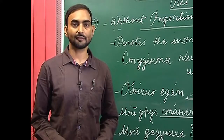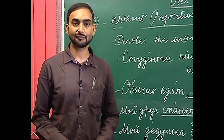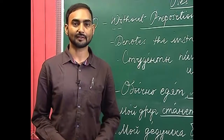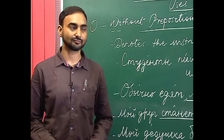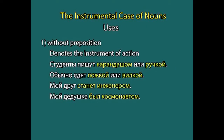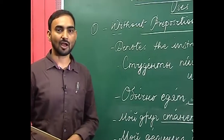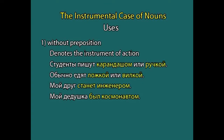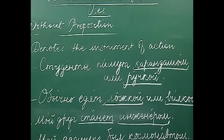In the previous lessons we have discussed five cases in Russian: nominative, genitive, prepositional, accusative, and dative. Now we will discuss the sixth and final case — the instrumental case. Today we will talk about its uses: how do we use the instrumental case of nouns in Russian. The first use is without preposition. As the name suggests, the primary use of the instrumental case is to denote the instrument of action.